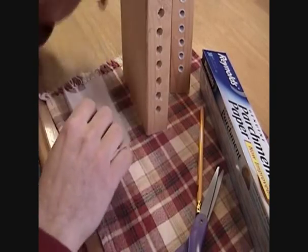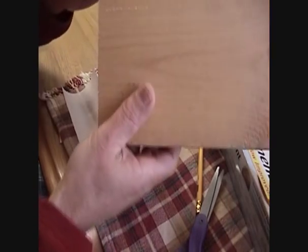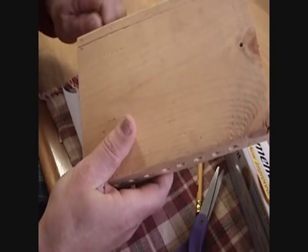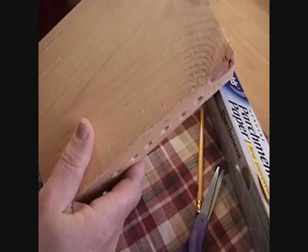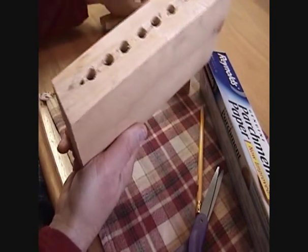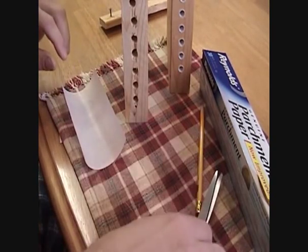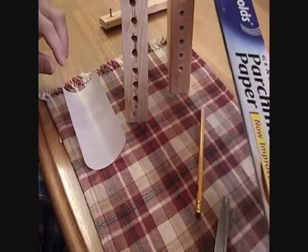Okay, we have our nest block all done with the back still on it, so we'll take the back off. Now you have just the back and the holes that need to be stuffed. So what we've got is our parchment paper.